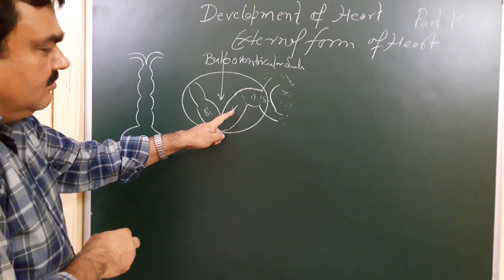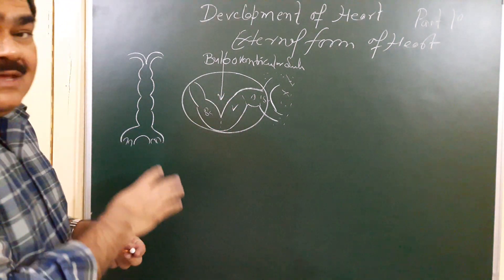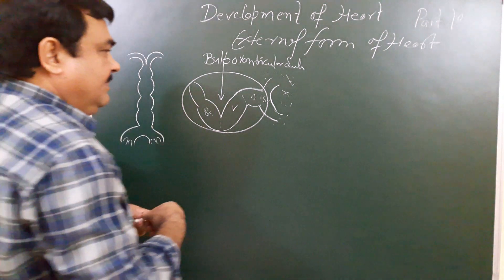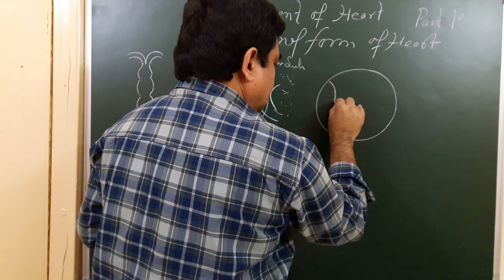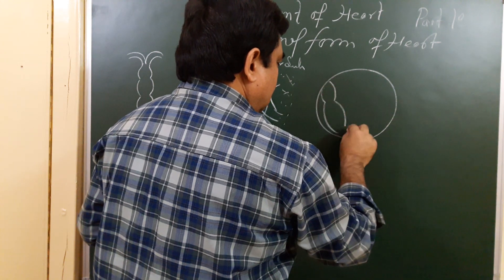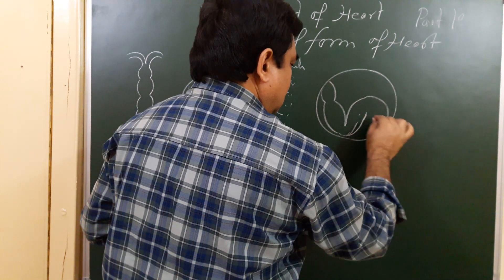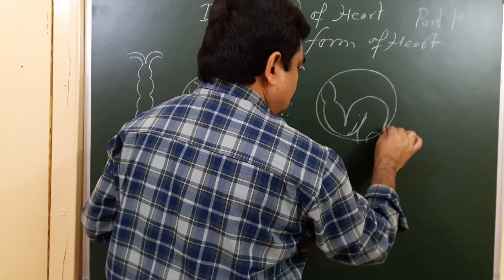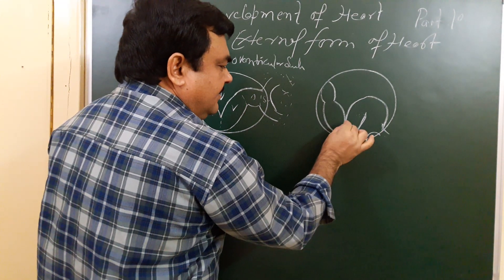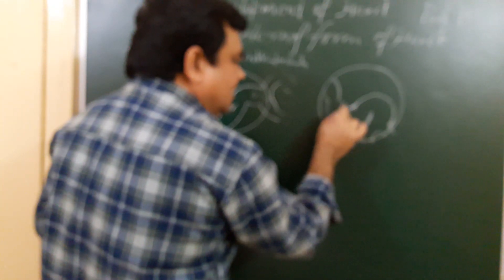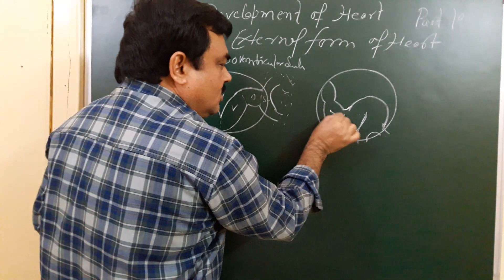Gradually this bulbus cordis absorbs into the ventricle and this loop takes shape. This sulcus which is here deep becomes shallow. This part is bulbus cordis, and the lower part of the bulbus cordis is the conus. This conus absorbs into the ventricle.